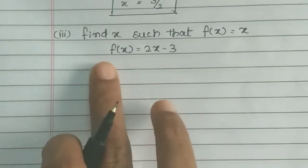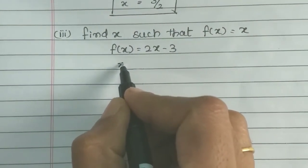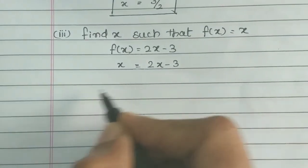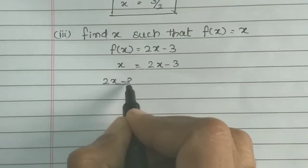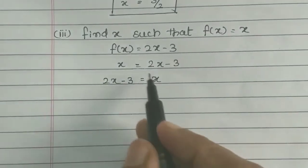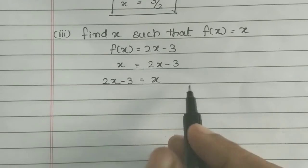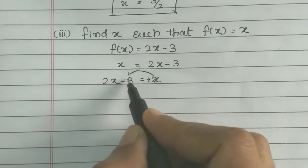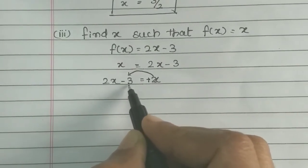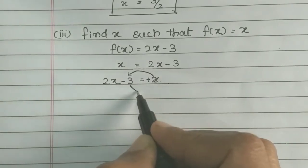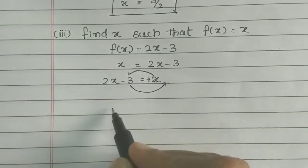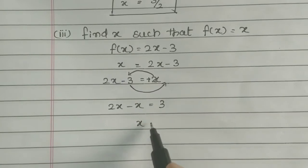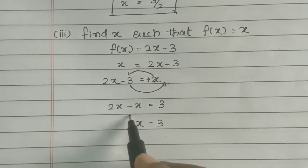Third option: find x such that f(x) = x. So 2x - 3 = x. Moving x to the left-hand side and constant to the right-hand side: 2x - x = 3, so x = 3.